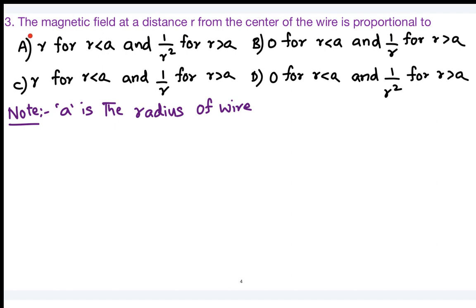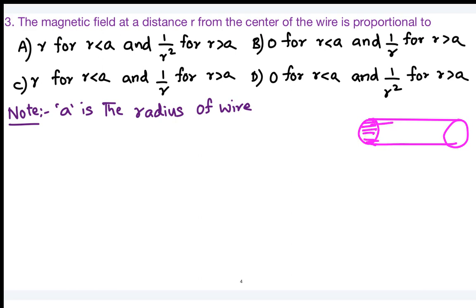Next question: find the magnetic field intensity at a distance r from the center of a thick wire of radius a. The options involve proportionality to r when r < a and proportional to 1/r² for r > a. Consider the wire as a thick conductor with radius a, and analyze points both inside and outside.